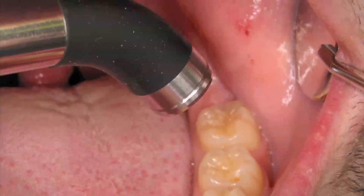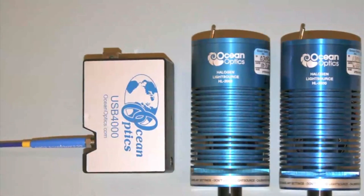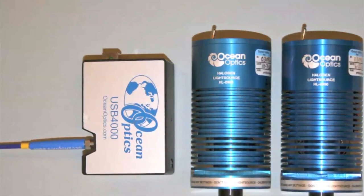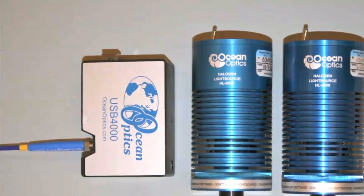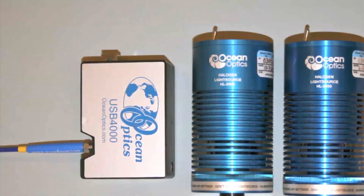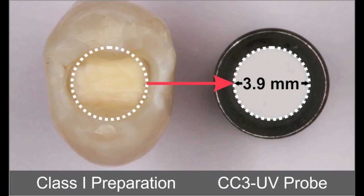Since dental radiometers have been reported to be inaccurate, this study used an Ocean Optics laboratory-grade NIST reference spectral radiometer attached by a fiber optic cable to a 3.9 mm diameter sensor.